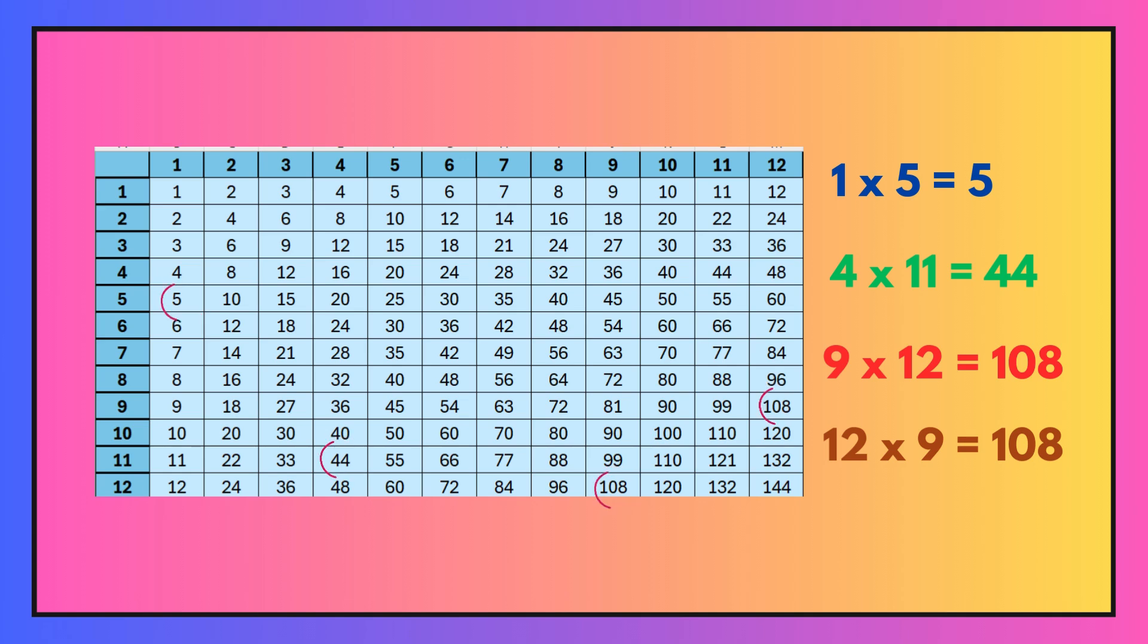So for the first one, nine times twelve, you'd select nine from the top and twelve from the side and they would meet a hundred and eight on the bottom row. But then for the next one, twelve times nine, you'd select twelve from the top and nine from the side. And again, they would meet a hundred and eight. So they're just flip times tables and they both give you the same answer.